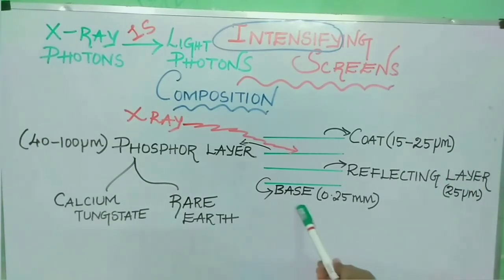Next is base, which is the supporting component of the screen made up of polyester plastic like the one used for radiographic film. The thickness of base is about 0.25 millimeters.